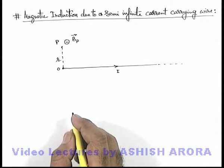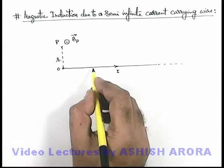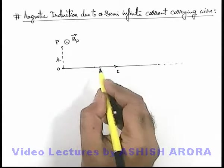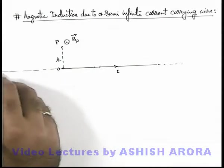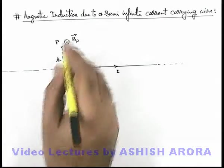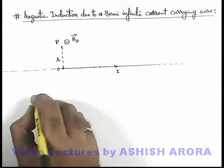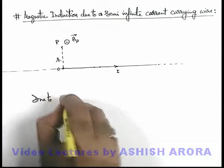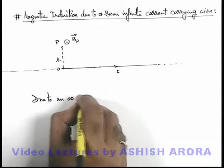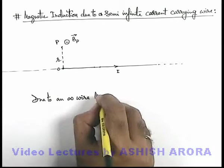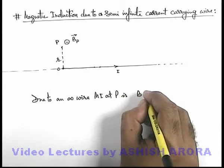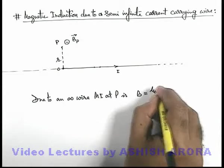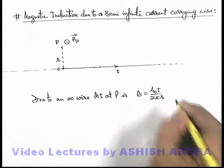And this can be directly obtained by either using the integral of magnetic induction by a current element, or directly we can say due to an infinite wire, we know magnetic induction we have just now calculated. Due to an infinite wire, magnetic induction at P is, this B we can write as μ₀I by 2πr, in the previous article we have calculated.